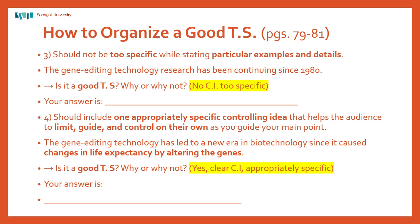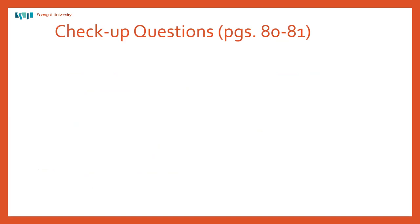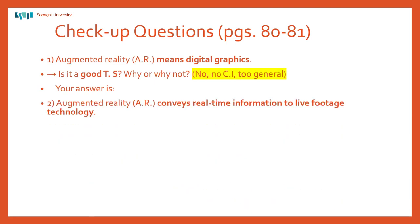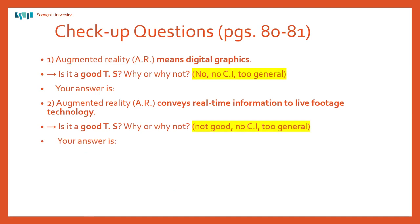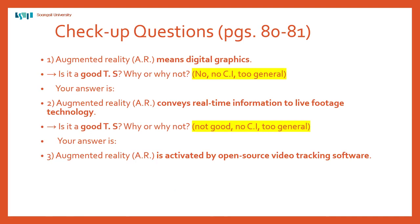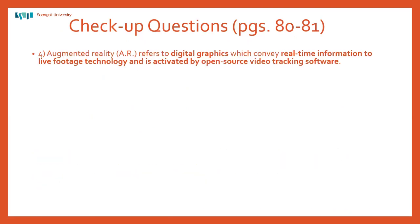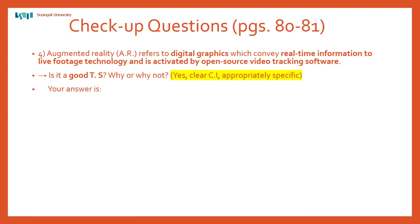The next two pages, 80 and 81, give more examples of topic sentences. The green ones are not complete — not good. The red ones are examples of better topic sentences. The first one: 'Augmented reality means digital graphics' — too general, no controlling idea. Number two: 'Augmented reality AR conveys real-time information to live footage technology' — better, but still too general. And the third one: 'Augmented reality is activated by open source video tracking software' — too specific.